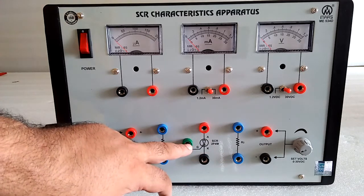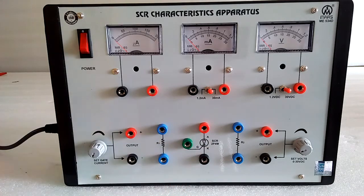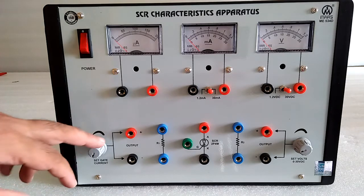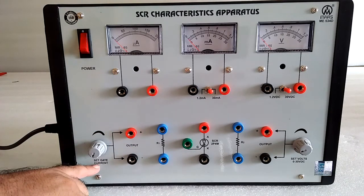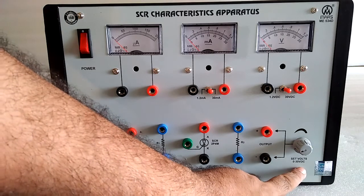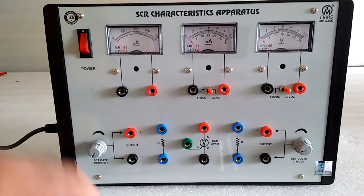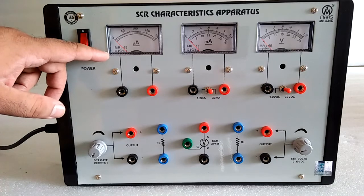Here all the anode, cathode and gate connections are brought out. Power supply here for the gate current, voltage 0 to 30 volt, current meter in micro ampere for the gate current.